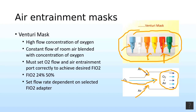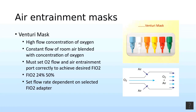FiO2 delivery settings are typically set at 24, 28, 31, 35, and 40% oxygen. The markings on the device indicate how much flow you need to set on the oxygen meter in order to achieve the desired FiO2.